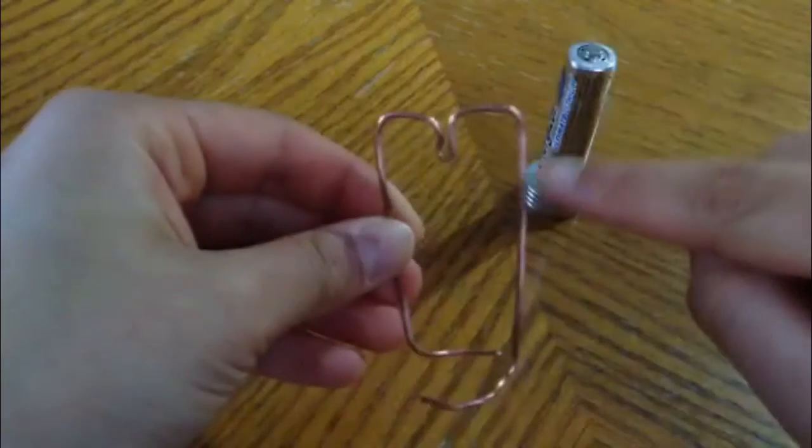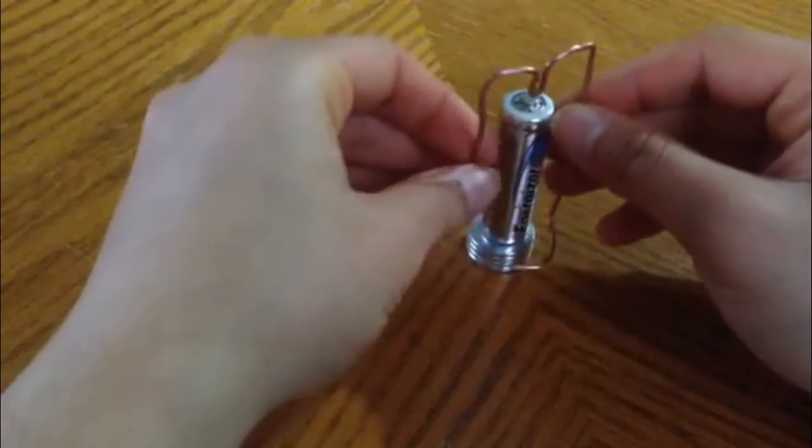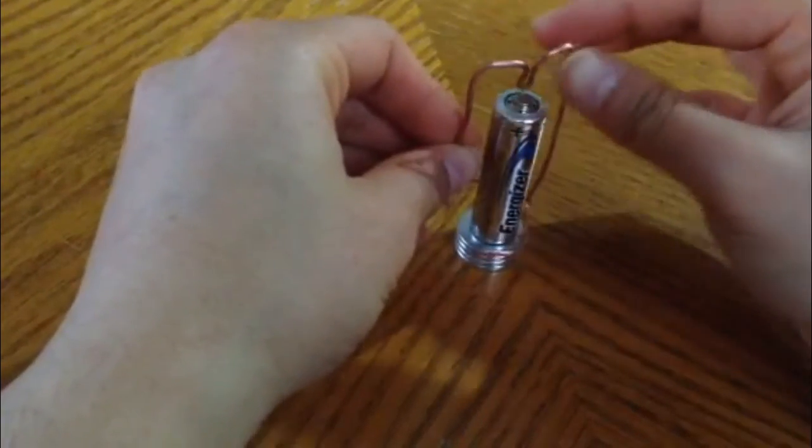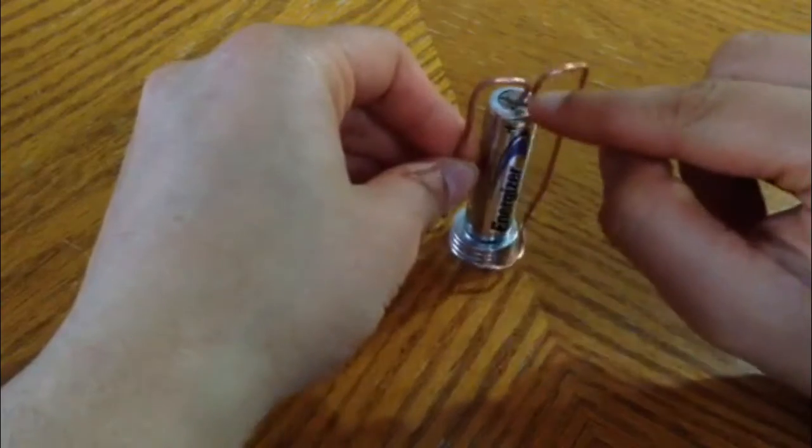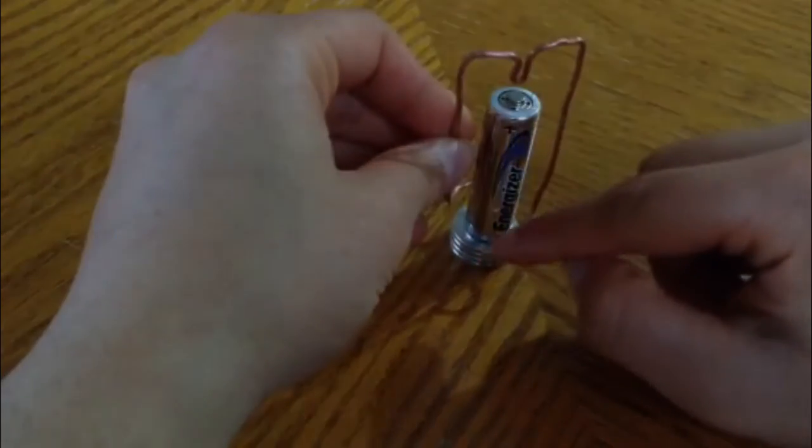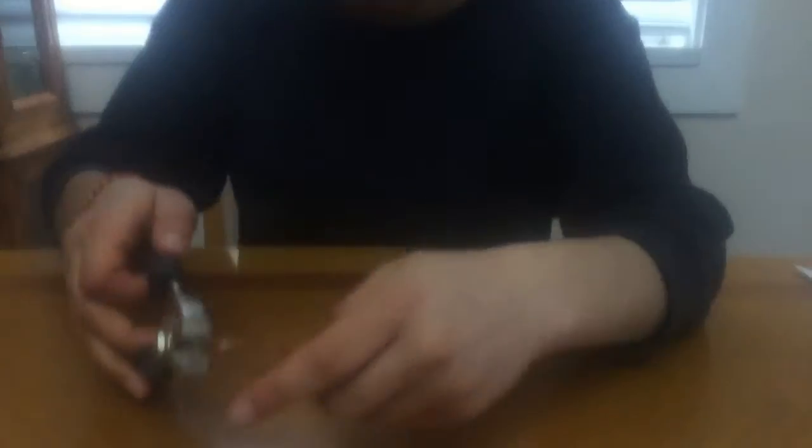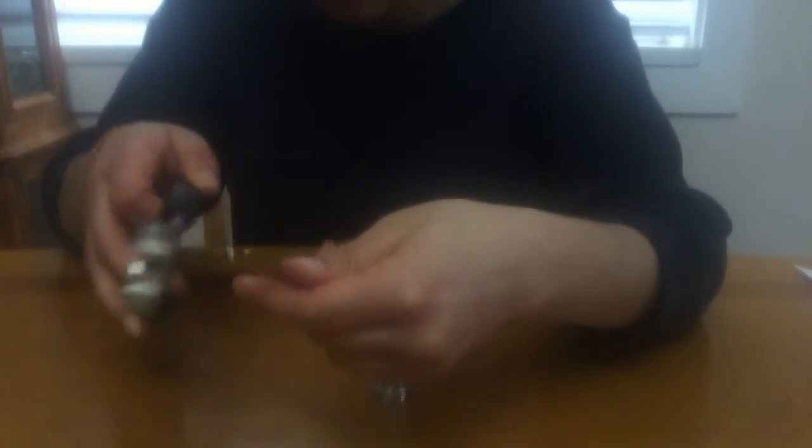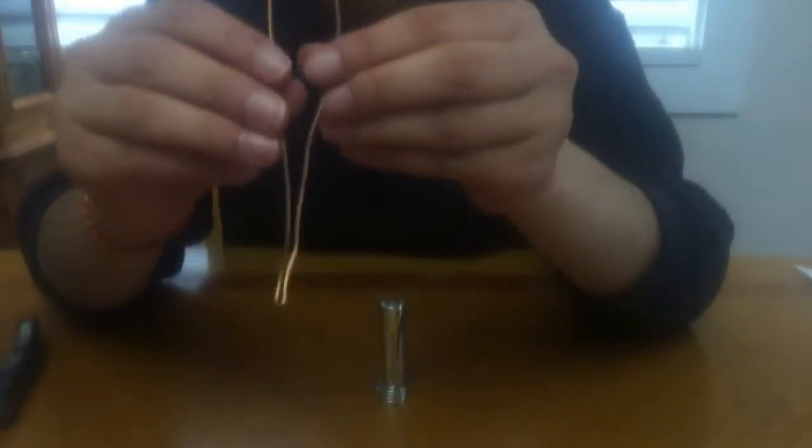From there, we are going to use the pliers to shape the wire into a rectangle like this one. Note that the wire always has to be touching the positive end of the battery and it has to encircle fairly close to the magnets at the bottom. That is why I am bending the middle of the wire here as it will touch the top.